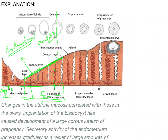After ovulation a corpus luteum is formed, and the ovum is released from the Graafian follicle. Then you start getting the maintenance phase, or what we call the secretory phase, where all efforts are made toward maintaining the endometrial thickness so that it can be ready to implant the zygote or fertilized egg and help in sustaining the pregnancy.